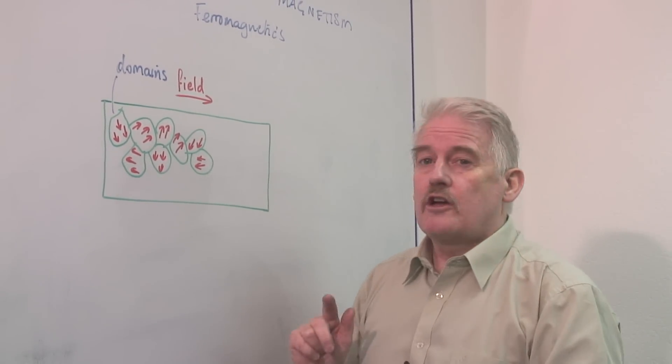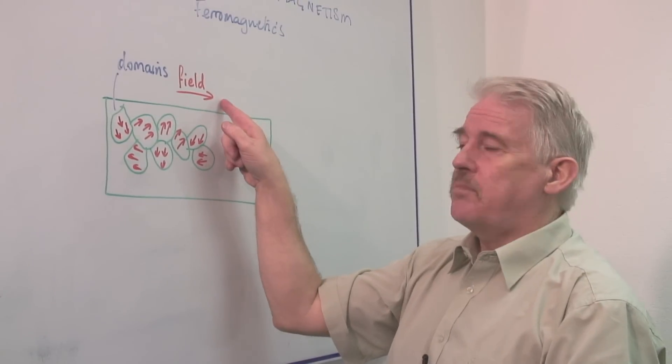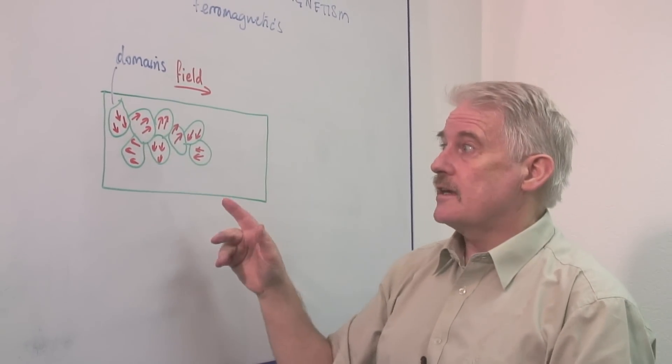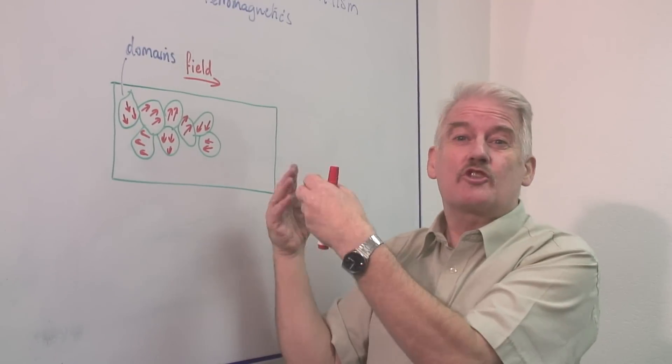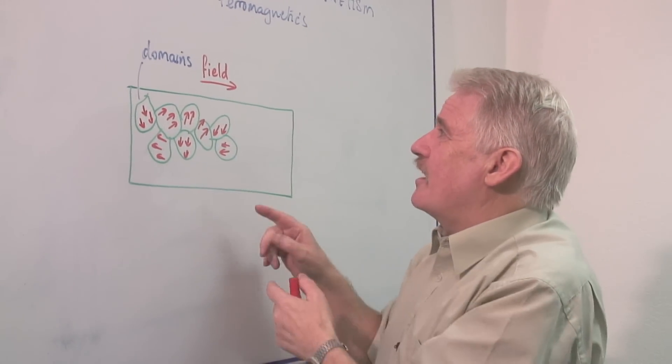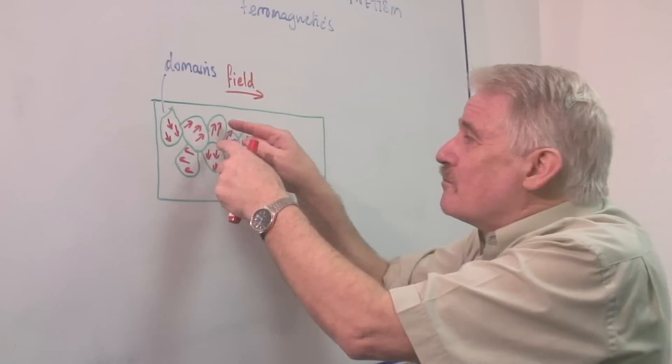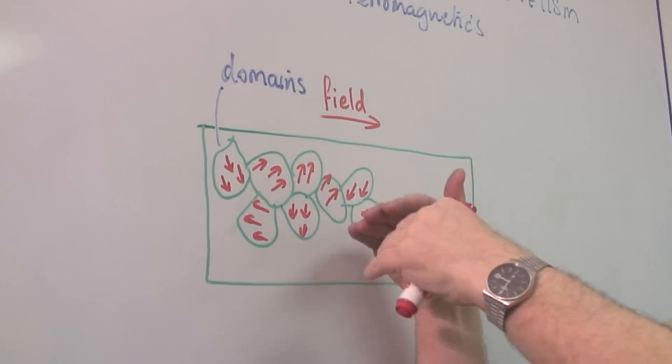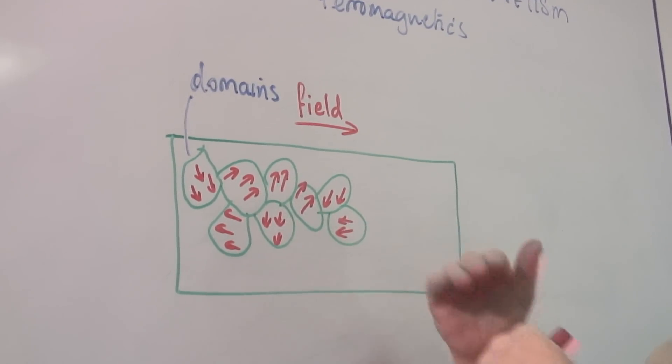But as soon as a magnetic field is applied to the ferromagnetic, what happens is at first when it's a small field, the domains in that direction start pulling atoms from the other domains into that direction.